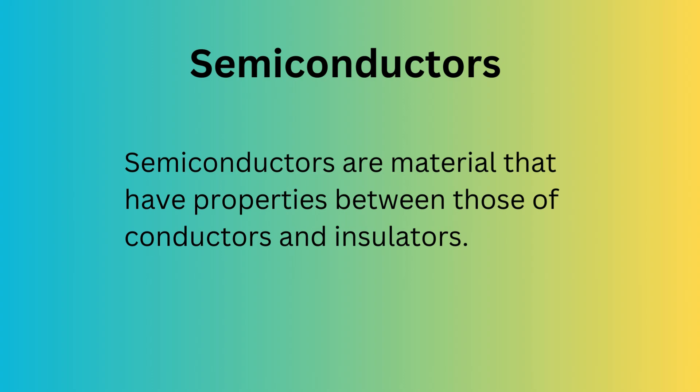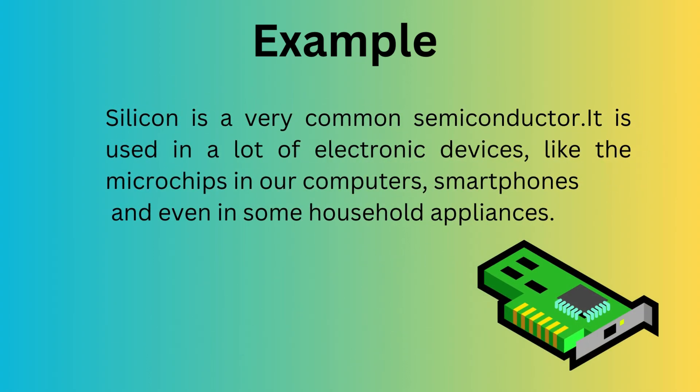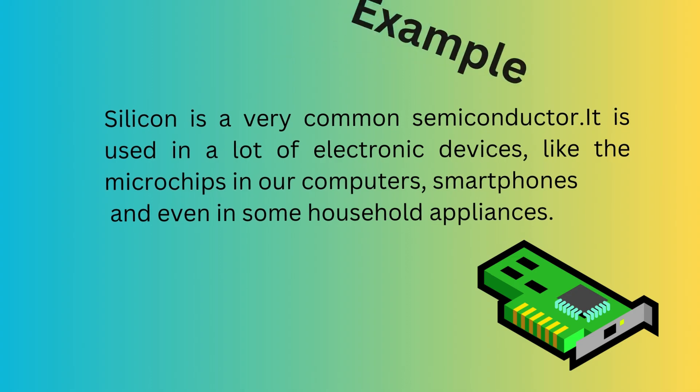Semiconductors are materials that have properties between those of conductors and insulators. This means they can sometimes conduct electricity but not always — it depends on certain conditions like the presence of impurities or the application of an electric field. For example, silicon is a very common semiconductor, used in electronic devices like the microchips in your computers, smartphones, and even some household appliances.